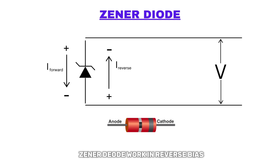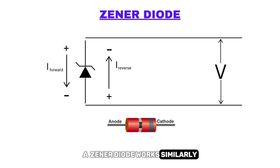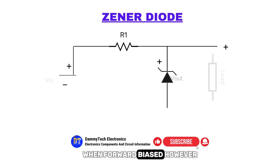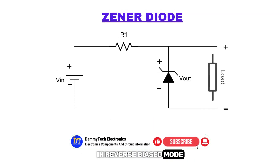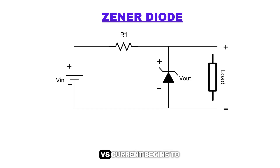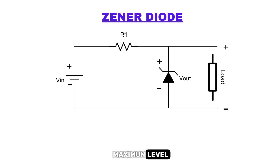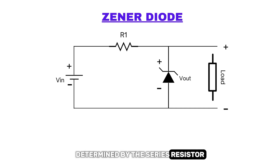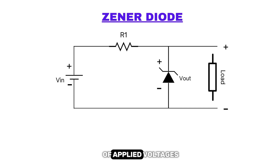But how does a Zener diode work in reverse bias? A Zener diode works similarly to a regular diode when forward biased. However, in reverse bias mode, a small leakage current flows through the diode. As the reverse voltage increases and reaches the predetermined breakdown voltage VZ, current begins to flow through the diode. This current reaches a maximum level determined by the series resistor, after which it stabilizes and remains constant across a wide range of applied voltages.